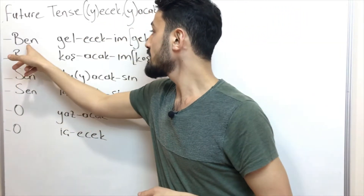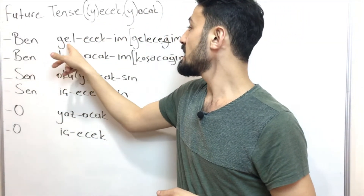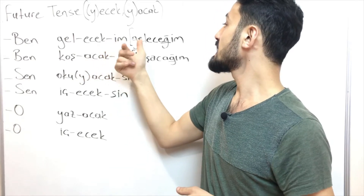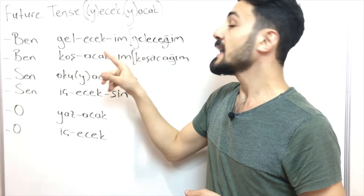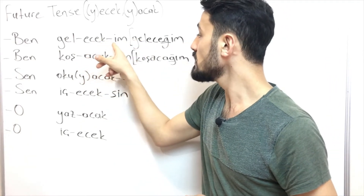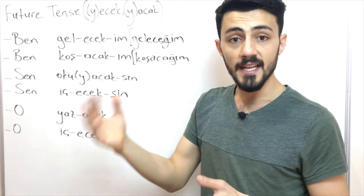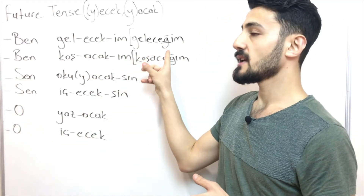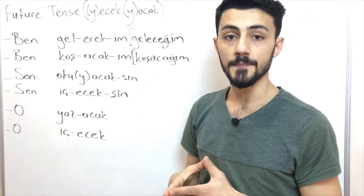Ben gel-ecek-im → geleceğim. If the k sound stays between two vowels, it changes to a soft g: geleceğim.